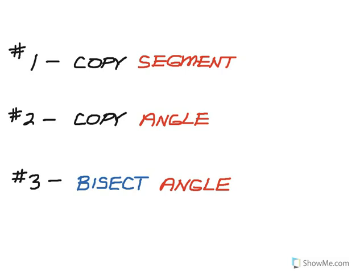Lesson 10.1 is about basic constructions. In this lesson, we're going to learn three basic constructions: how to copy a segment, how to copy a given angle, and how to bisect a given angle.